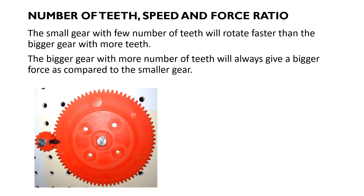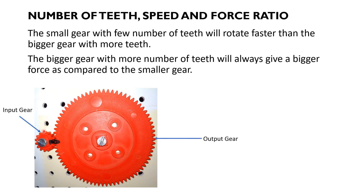Let's do an experiment. We've got two gears meshed together — you can notice the mesh point here. The smaller gear will rotate in an anti-clockwise direction whereas the bigger gear will rotate in a clockwise direction. The smaller gear is the input or driver gear, and the bigger one is the output or driven gear. I want us to draw a table for these two gears.